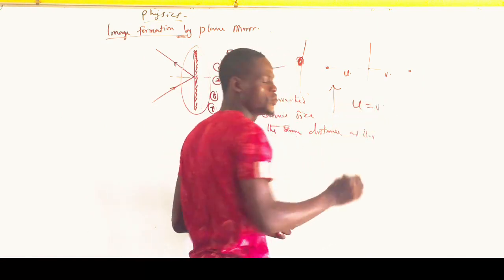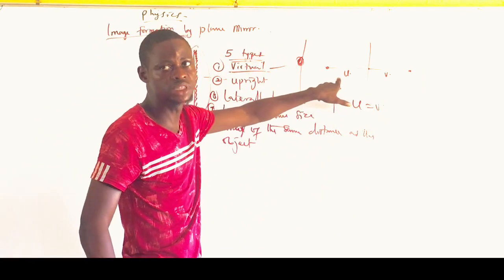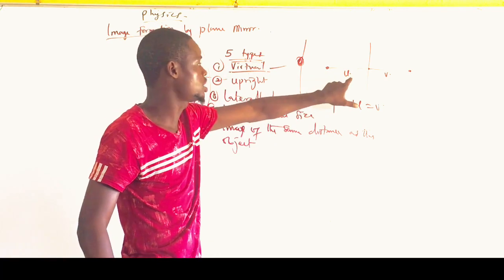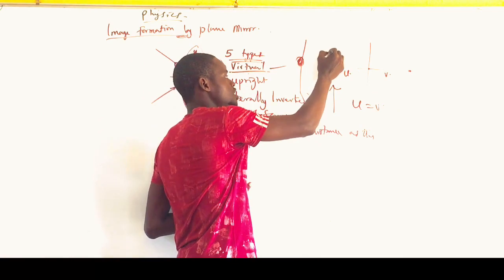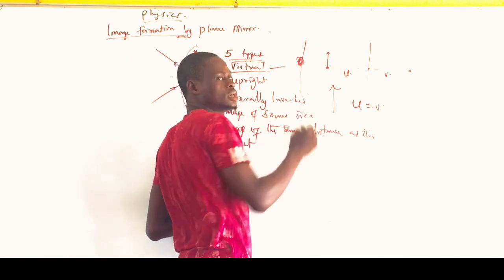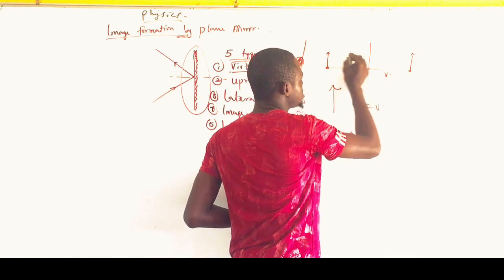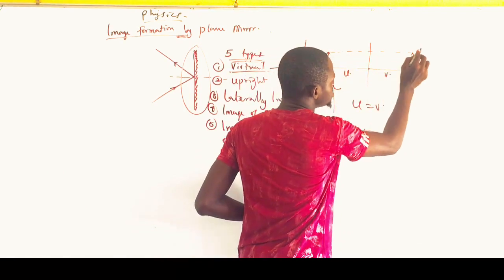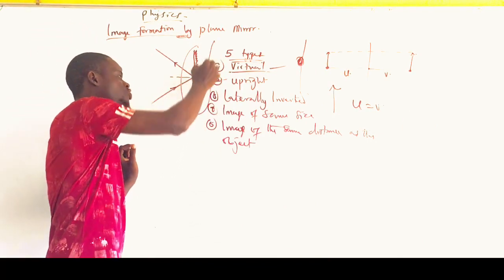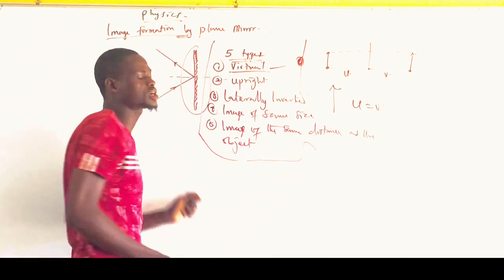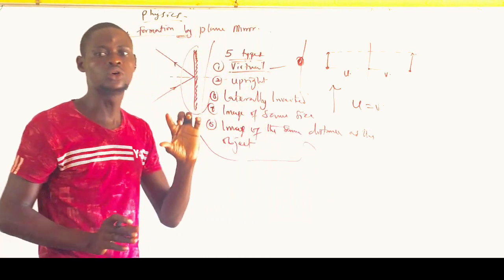For all plane mirrors, U must equal V — object distance must equal image distance. If the object is of a certain size, then the image formed will also be the same size and the same height as the object. These five characteristics are the major characteristics of the image formed by a plane mirror.